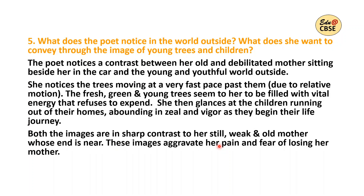Question 5: what does the poet notice in the world outside, and what does she want to convey through the image of young trees and children? The poet notices a contrast between her old and debilitated mother sitting beside her in the car and the young and youthful world outside. She notices the trees moving at a very fast pace past them — this is due to relative motion. The fresh, green and young trees seem to be filled with vital energy that refuses to expend. She then glances at the children running out of their homes, abounding in zeal and vigour as they begin their life journey.